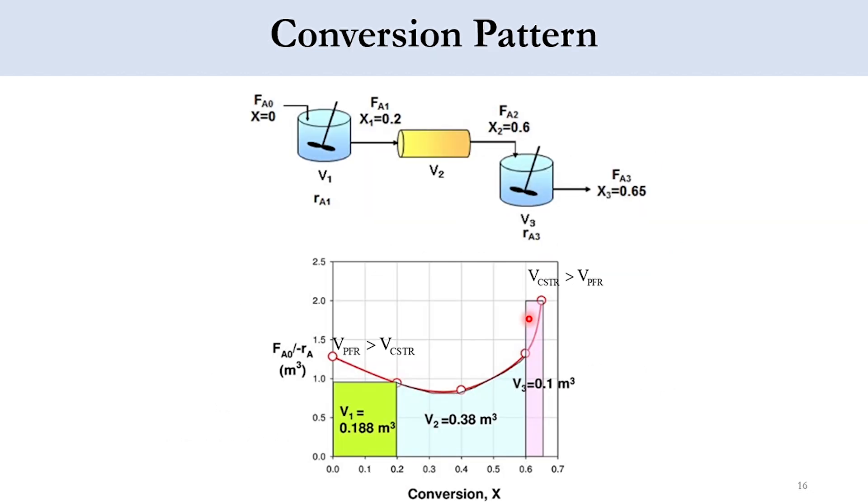Now if you see here, the first volume is 0.188 cubic meter, and you can see that if we have placed PFR first, then volume of PFR would be higher because this area would have been covered as well. Similarly, if you look here, obviously the CSTR volume would be higher because this region would also have been covered. And similarly for the last part which is 0.1 cubic meter, the CSTR volume is higher than PFR because this is the extra part coming out of this curve.